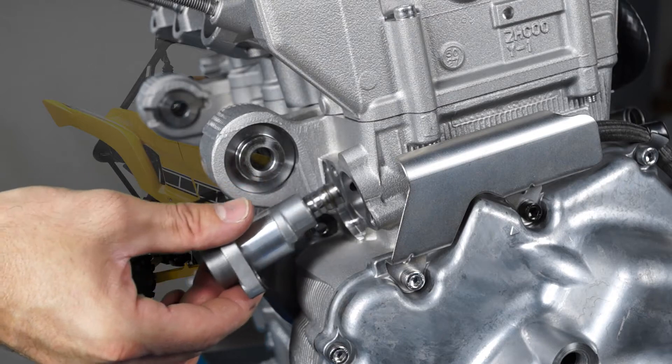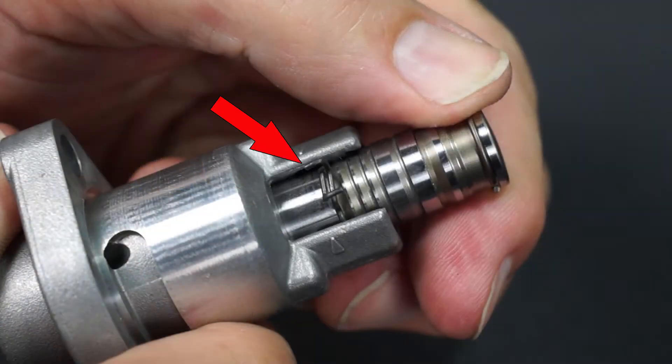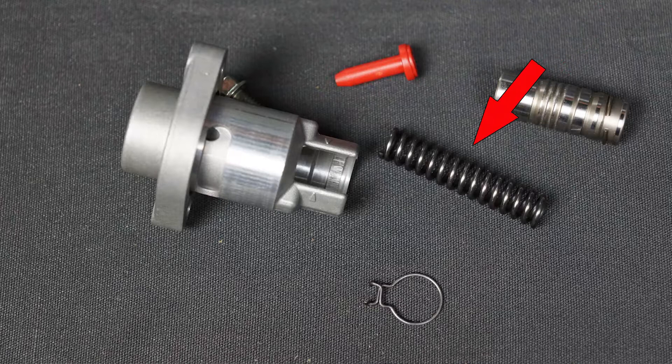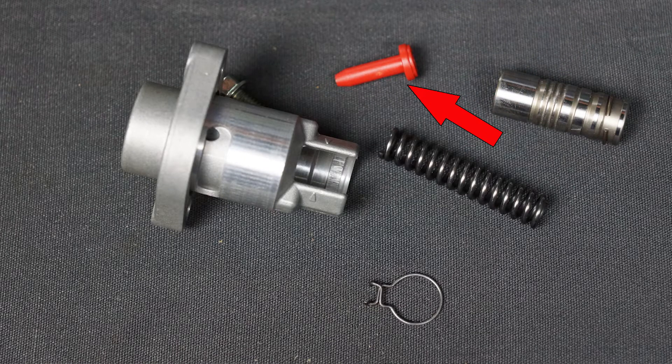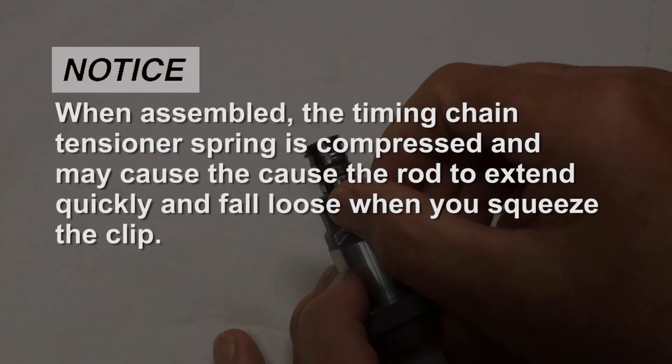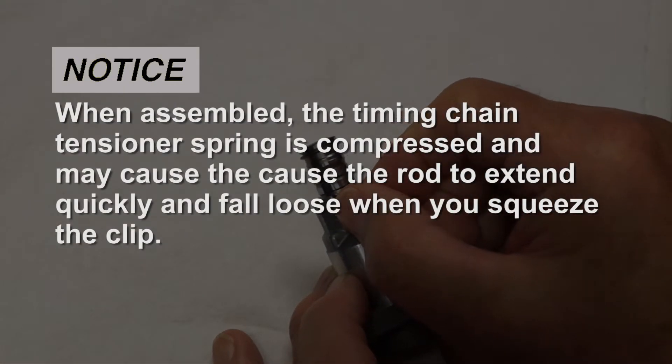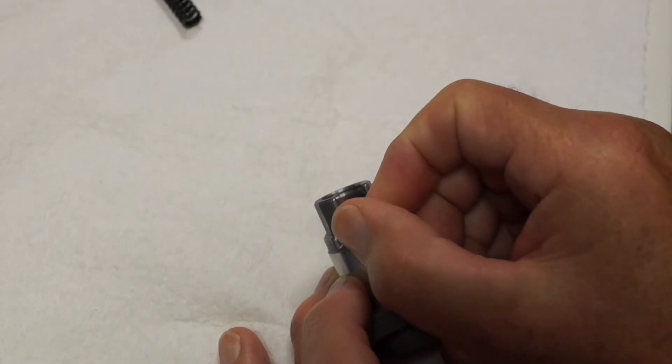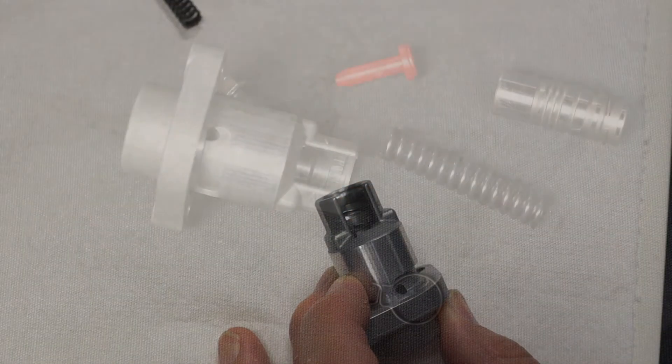Anytime the tensioner is removed from the engine it should be disassembled and inspected. Squeeze the clip and remove the tensioner rod, coil spring, and the red plastic spring guide which also acts as an oil restrictor regulating oil pressure inside the tensioner. When assembled, the tensioner spring is compressed and may cause the rod to extend quickly and fall loose when you squeeze the clip.